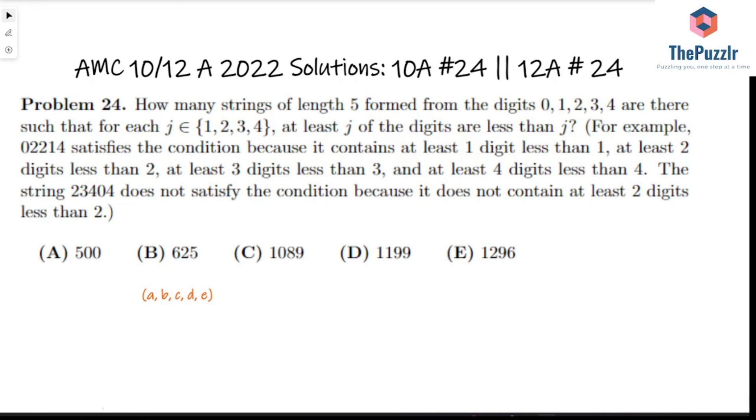So they give us a couple examples. For example, 02214 satisfies the conditions of the problem, but 23404 does not.